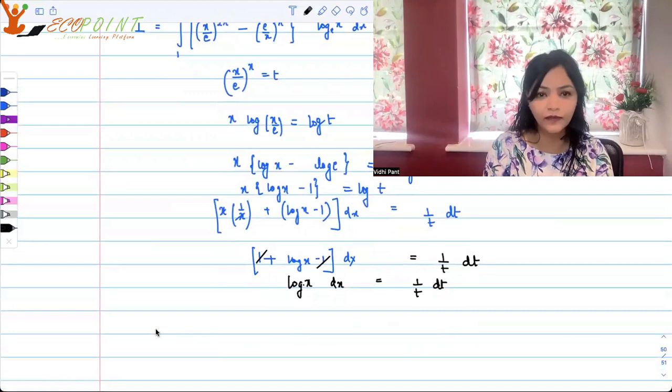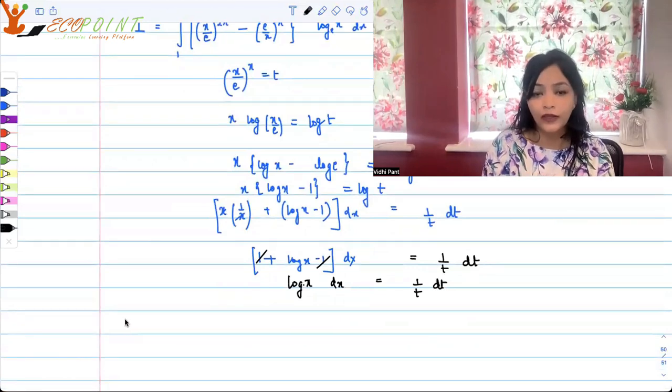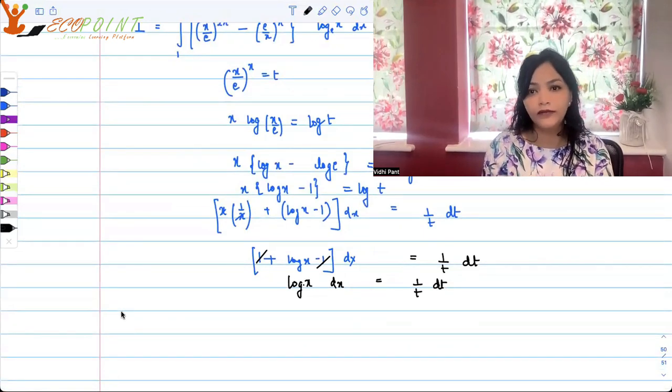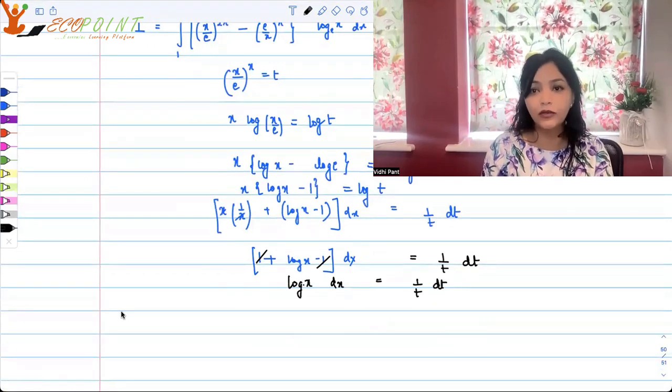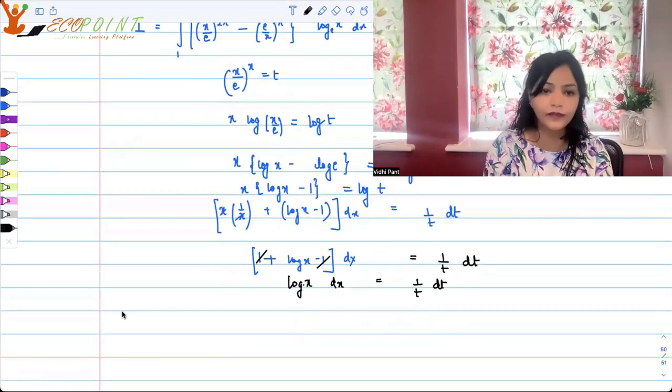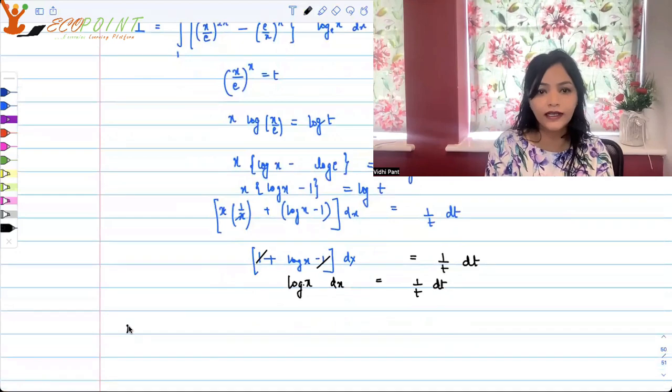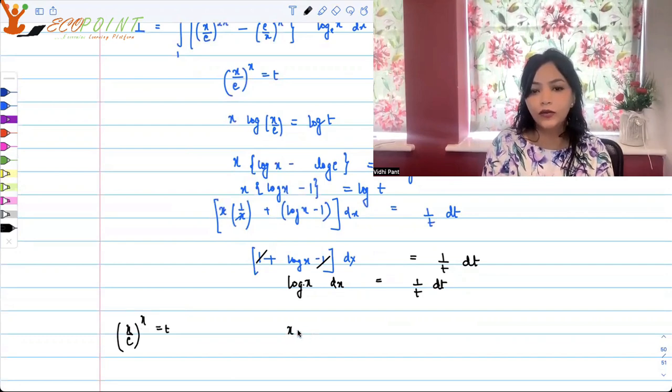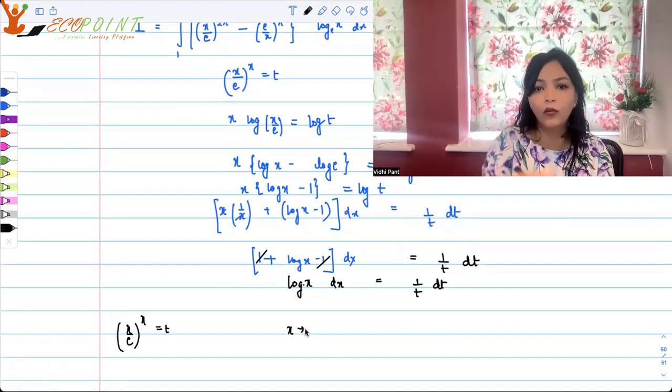Now I becomes, well, whenever you have a definite integral and you are using substitution, be very careful with the bounds. So what we have taken is x upon e to the power x as t. Now x was going from 1 to e.